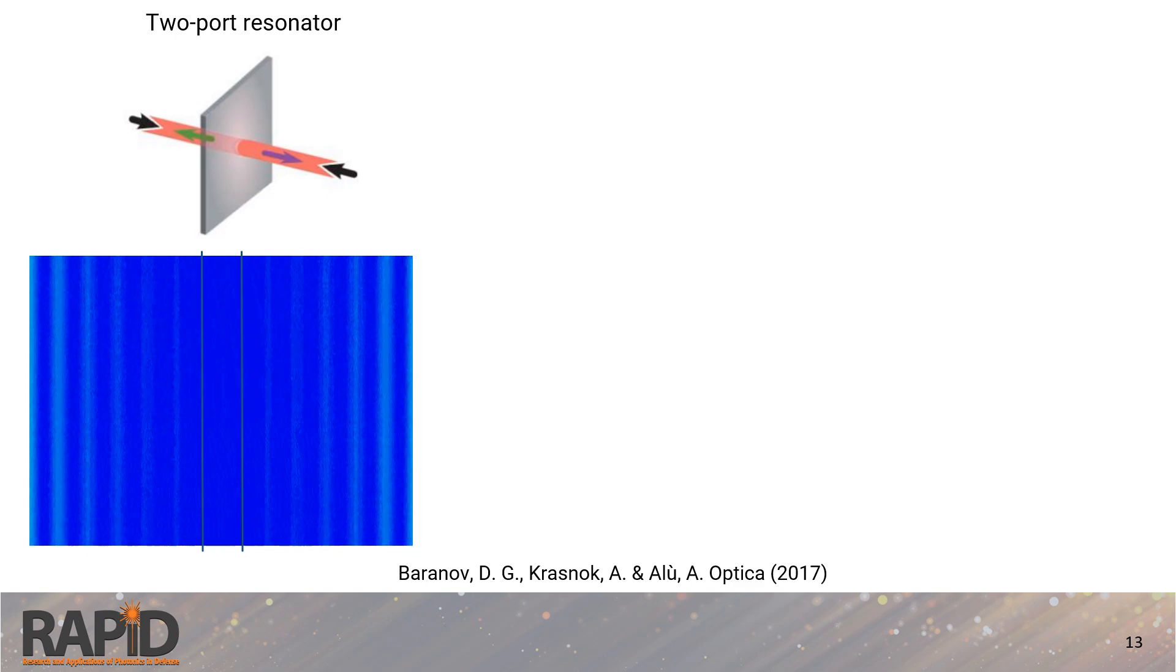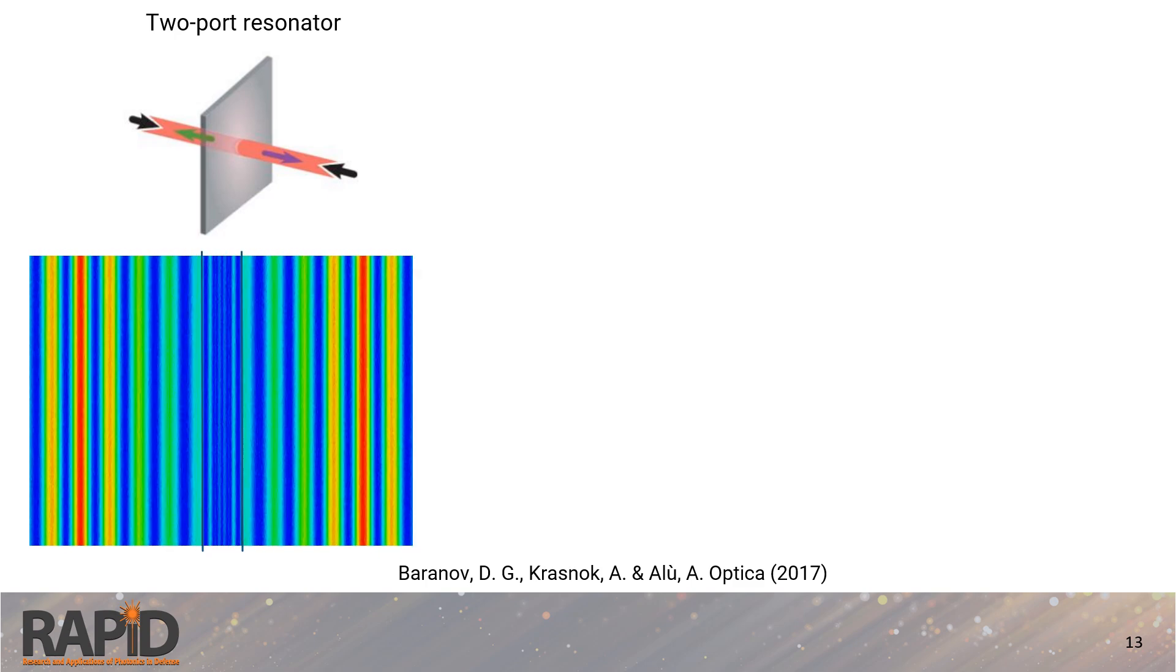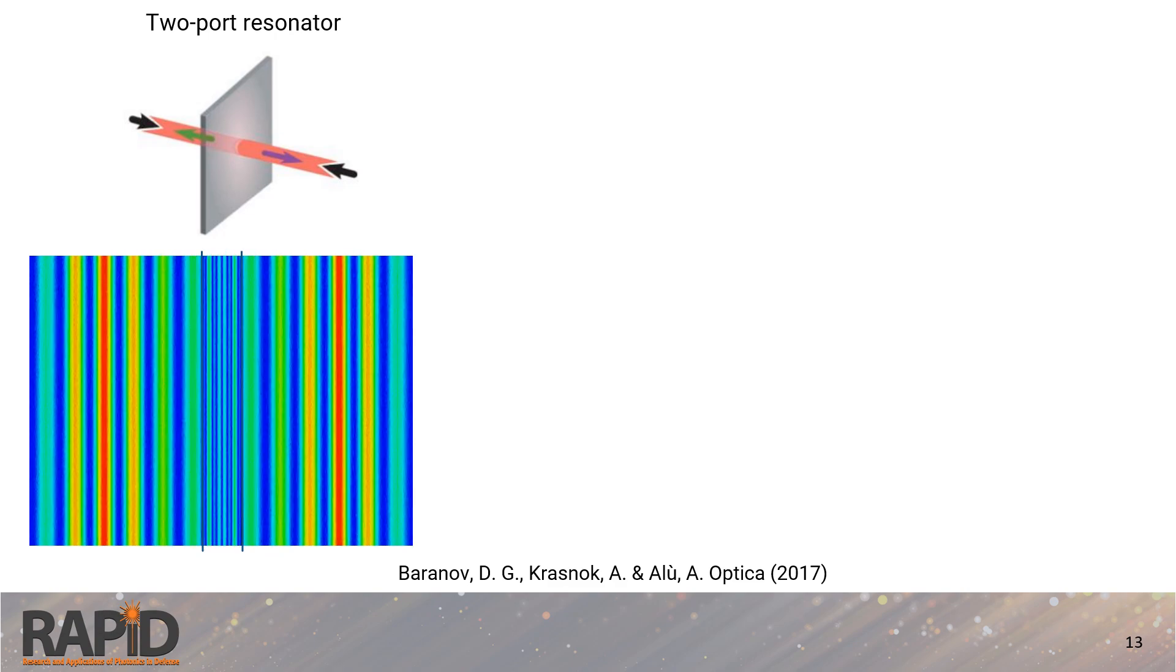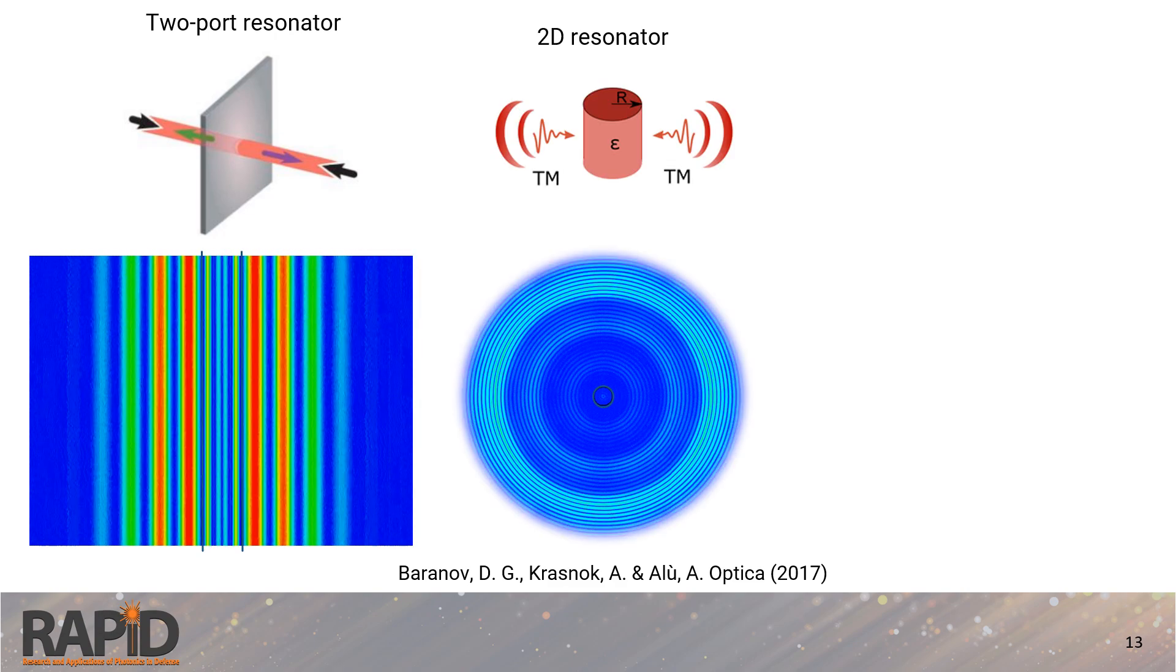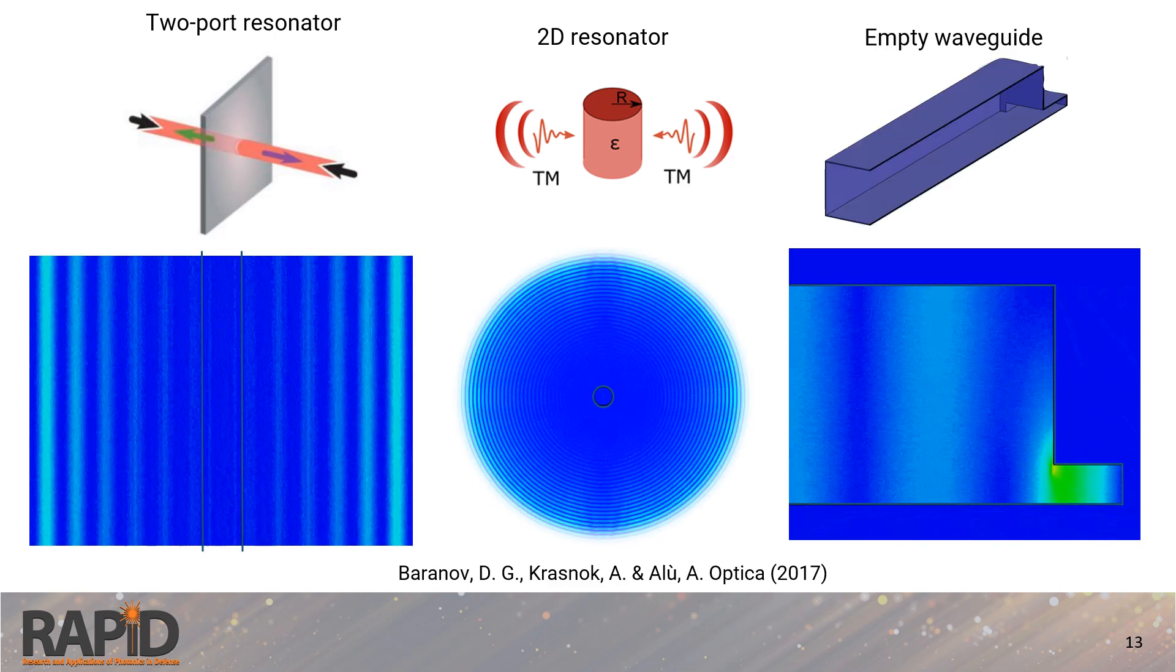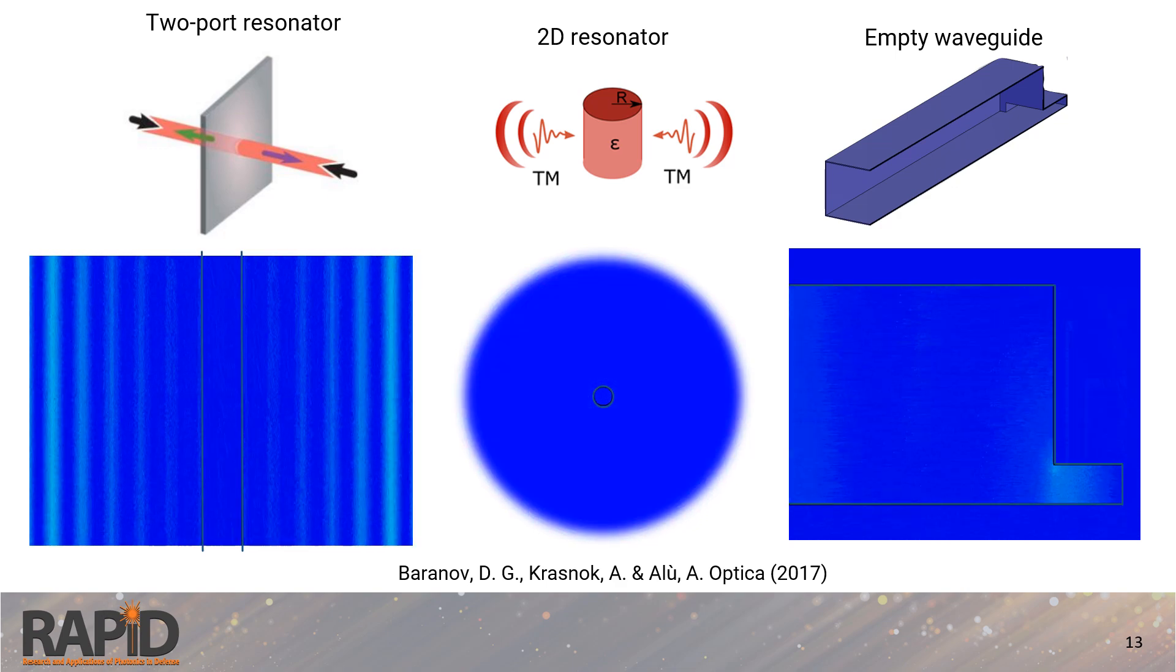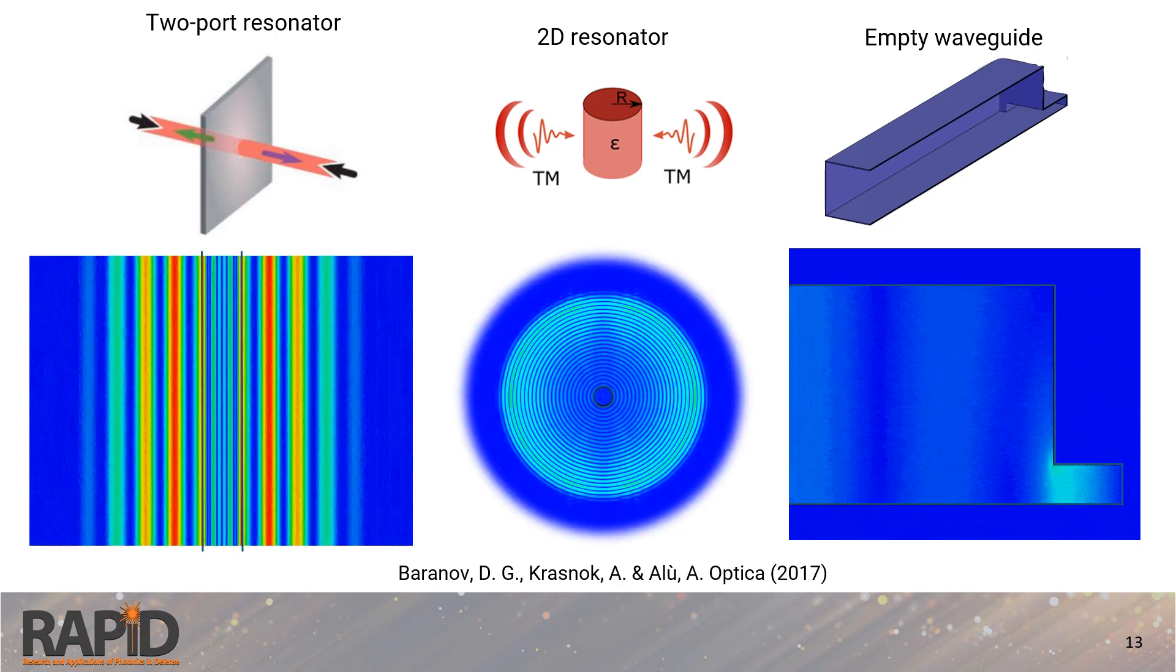This approach is versatile and extends to multiple multi-port systems. For instance, in a two-port resonator, we can excite the system from both ports, perfectly storing all the energy within the resonator. This method also applies to two-dimensional and three-dimensional resonators, and even empty waveguides with step discontinuities, allowing for perfect reflection-free excitation and precise energy localization in this waveguide.